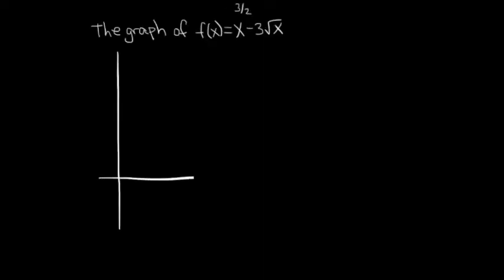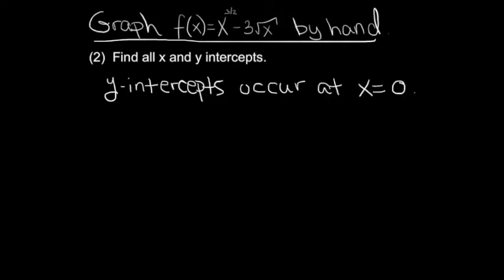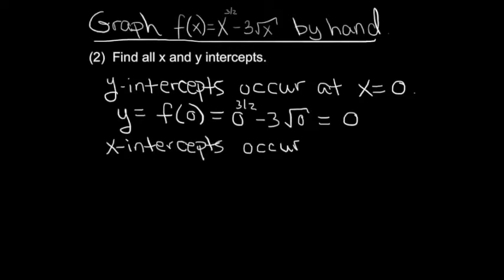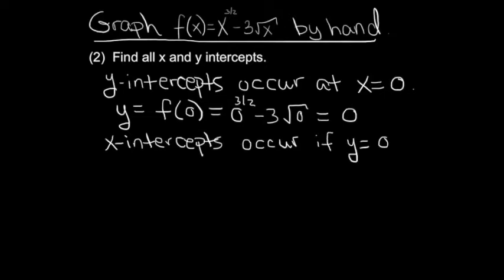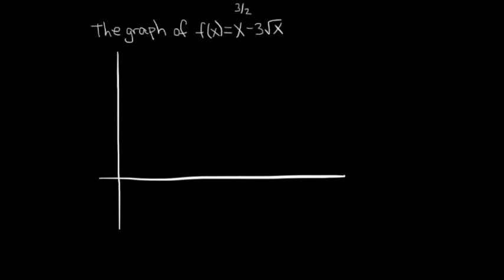On this slide we'll keep track of our progress. I've situated the axes anticipating that the graph will be over here. For the next step we find where the graph intersects the axes. Setting x equal to 0 shows the only y-intercept is y equals 0. X-intercepts occur when y equals 0. Setting y equal to 0 and factoring out a square root, we find the x-intercepts occur at x equals 0 and at x equals 3.